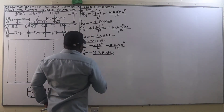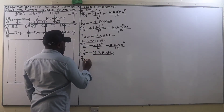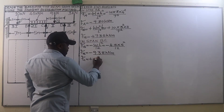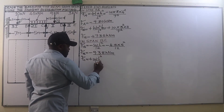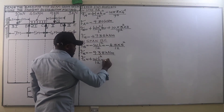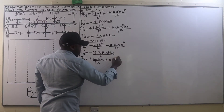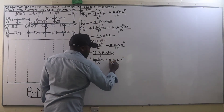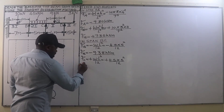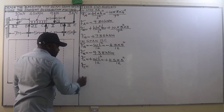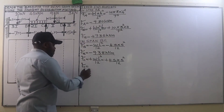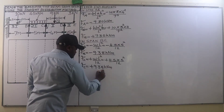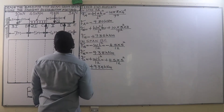The fixed end moment at C for span BC is a clockwise moment and therefore positive. It is given by positive W·L² divided by 12: positive 4.5 kN/m multiplied by 5 squared, divided by 12, giving a fixed end moment at C of positive 9.38 kN·m.